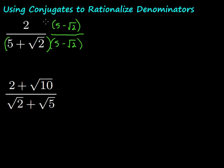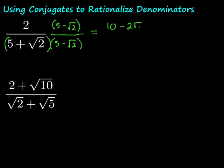On the top, we're going to distribute that 2 through. That's going to give us 2 times 5, which is 10, and then 2 times negative square root of 2, so that will be minus 2 square root of 2.